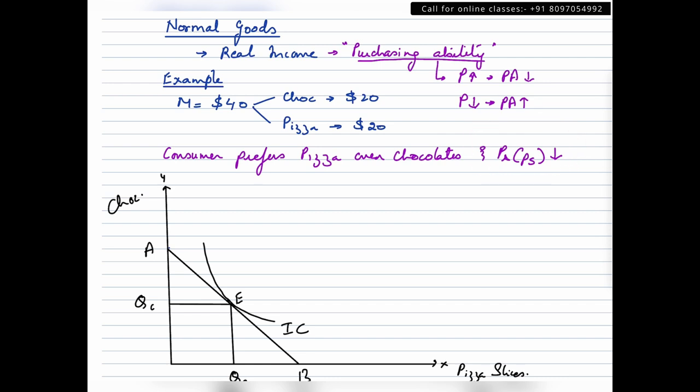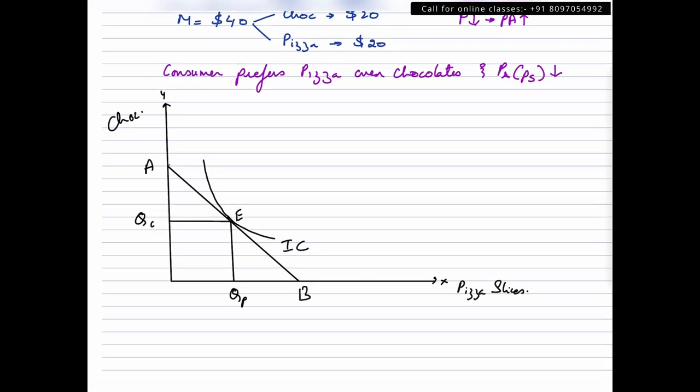Now if we've studied the price effect video and the rotations in budget line, we should be aware that whenever the price of a given commodity falls, a consumer will see a rotation in his budget line. How will the rotation look like? Somewhat like this. Let us say this is the new budget line which is AB1. Now price of pizza slices has gone down. That means consumer will increase the quantity of pizza slices. And since he's not really fond of chocolates, he wouldn't mind reducing his consumption of chocolates.